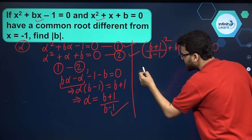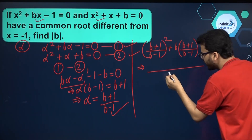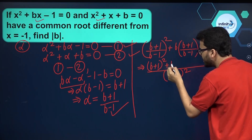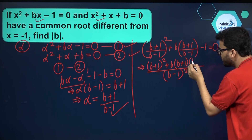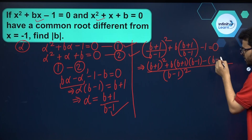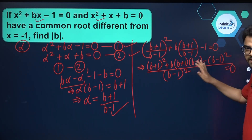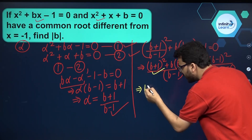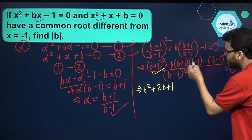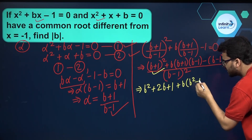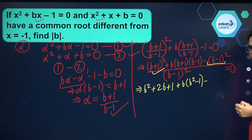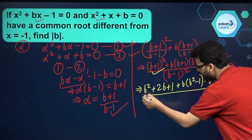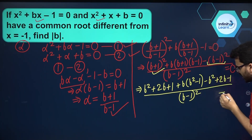Let's solve this equation for b. Taking the LCM of the denominators, which is (b-1)², we get: (b+1)² + b(b+1)(b-1) - (b-1)² = 0. Expanding using the (a+b)² formula: b² + 2b + 1, then b(b²-1), and opening the last bracket gives b² - 2b + 1, so the numerator becomes b² + 2b - 1, all over (b-1)² = 0.